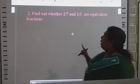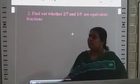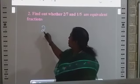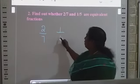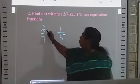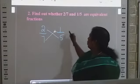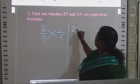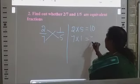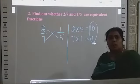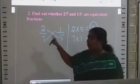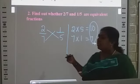Next example: find out whether 2 by 7 and 1 by 5 are equivalent fractions. Cross-multiply the numerator and denominator: 2 times 5 is 10, and 7 times 1 is 7. The products are different, so these two fractions are not equal.